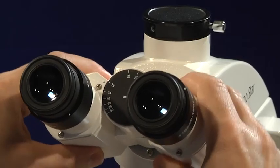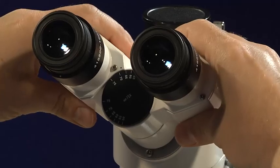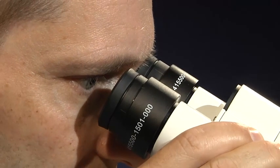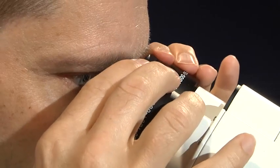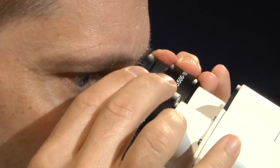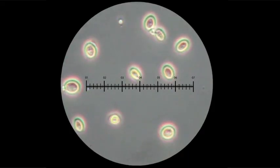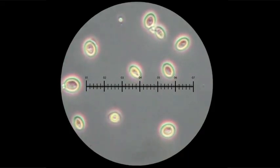The eyepieces further magnify the primary image produced by the objective, normally by ten times. They do not, however, increase resolution. Eyepieces may also contain additional devices like measuring graticules, allowing us to measure object dimensions, or reticules for easy counting of small objects.